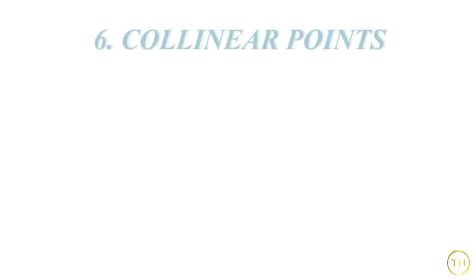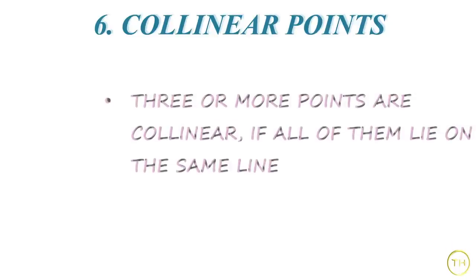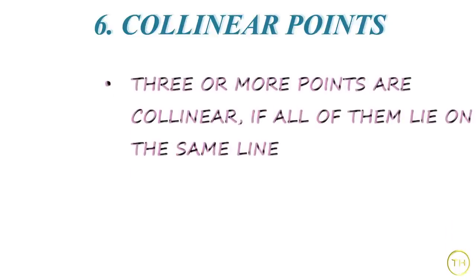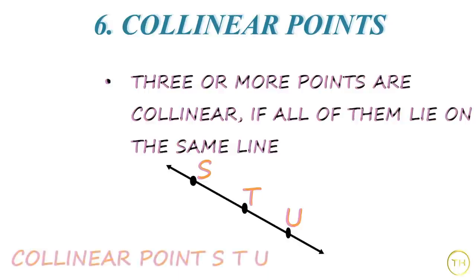Now, we will learn about collinear points. Three or more points are collinear if all of them lie on the same line. In the above figure, point S, point T and point U are collinear because they lie on the same line and the line L.